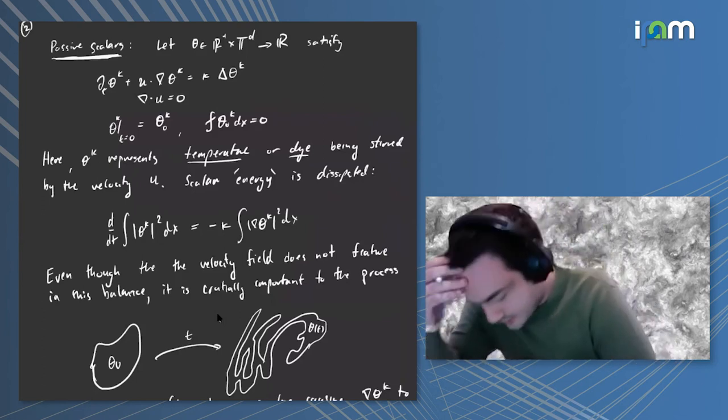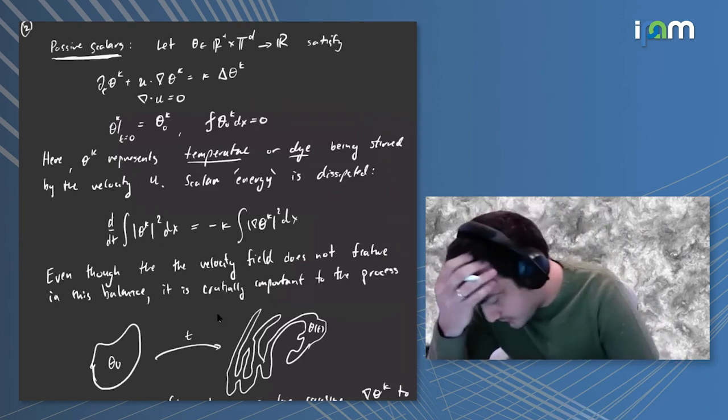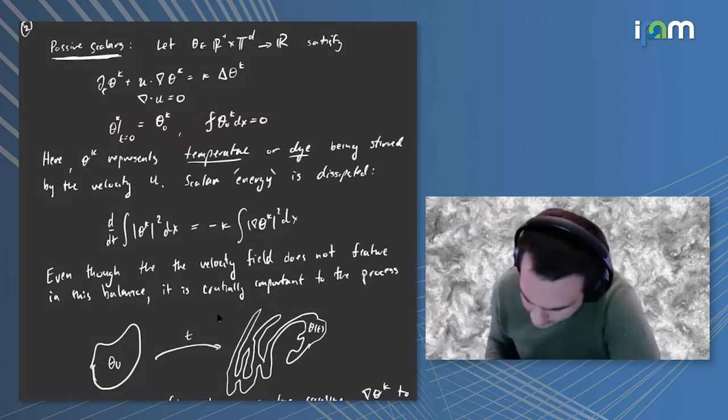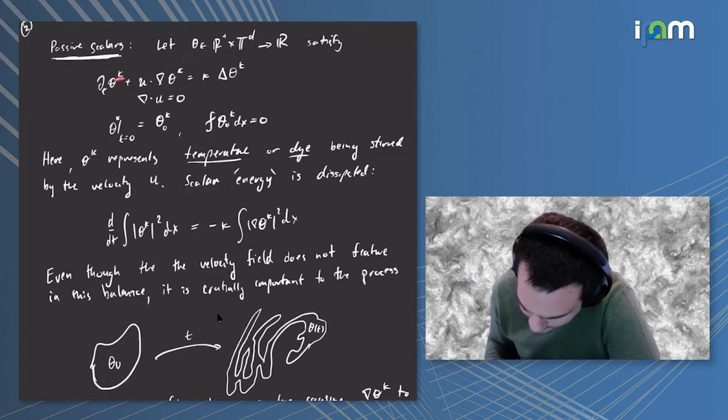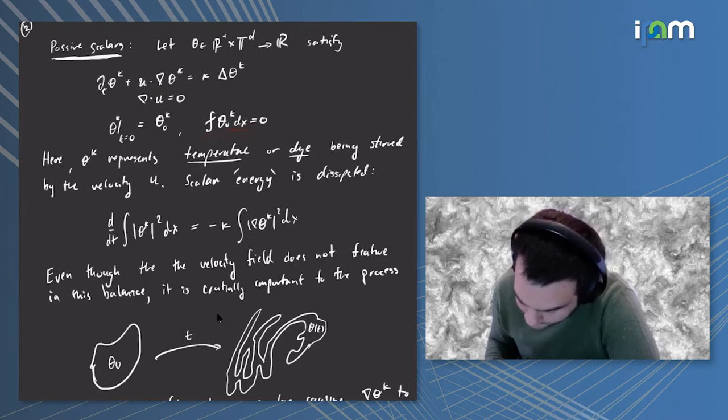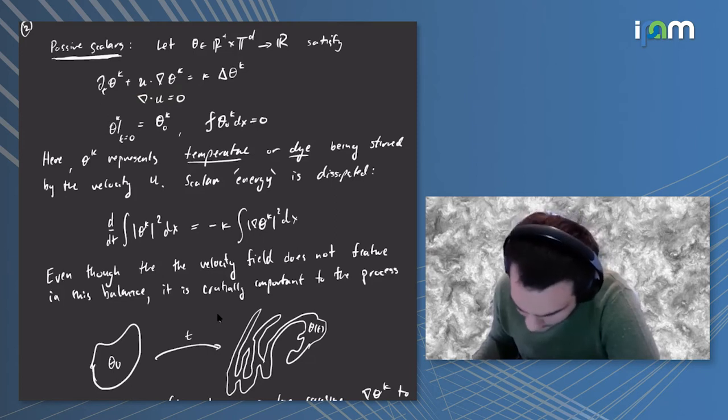The subject of this talk will be on a much simpler problem, a linear problem on passive scalars. The passive scalar theta satisfies an advection diffusion equation with advection diffusivity kappa by an incompressible velocity field. We'll consider initial data which is mean zero and we'll work on the torus.